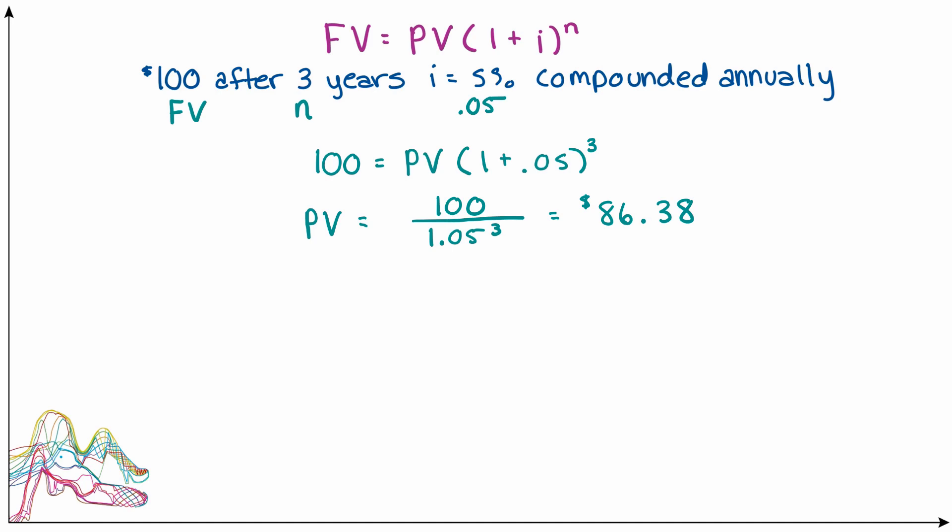Note that all we've done here is rearrange the formula that we had initially used to go forward in time and collect interest on our money. And we can say that present value is equal to future value divided by 1 plus the interest rate to the nth power. If this looks familiar to you, it's because it was in fact the formula given to you as the present value formula. But now you get a little bit more insight into where it comes from.